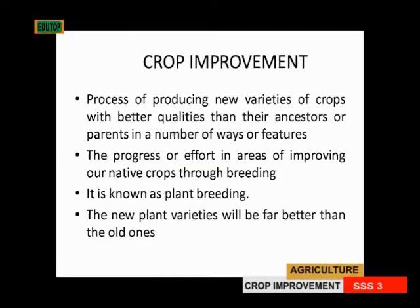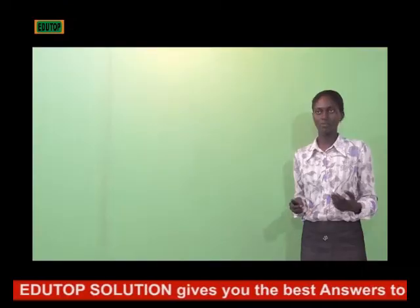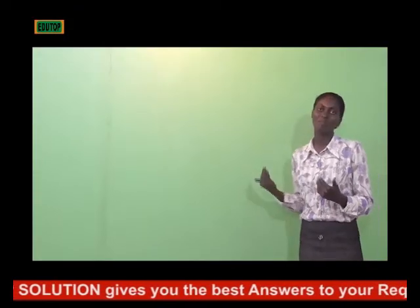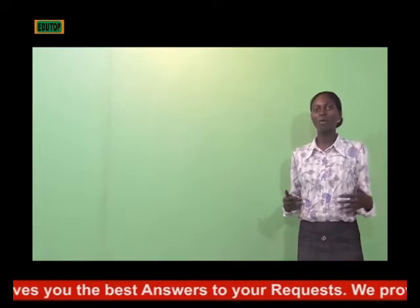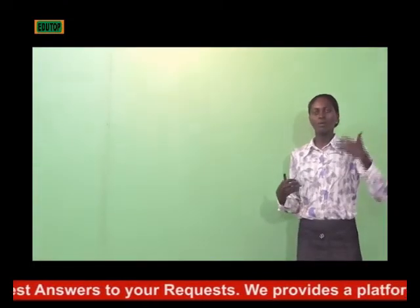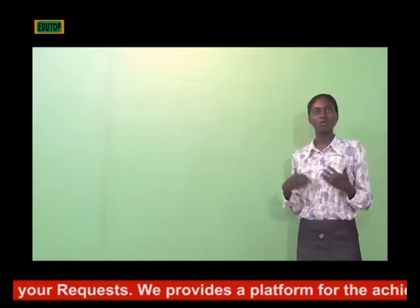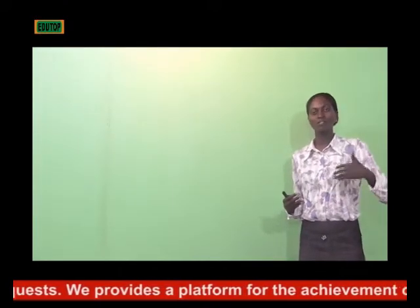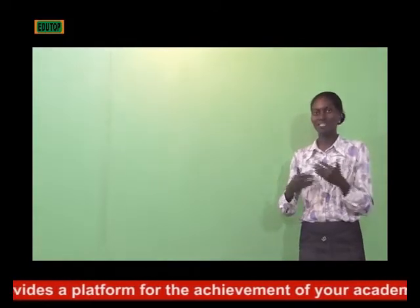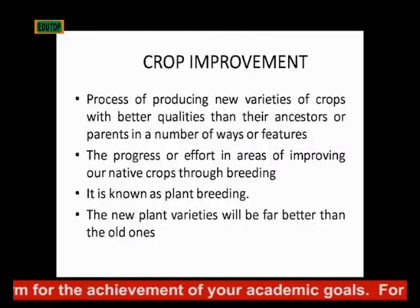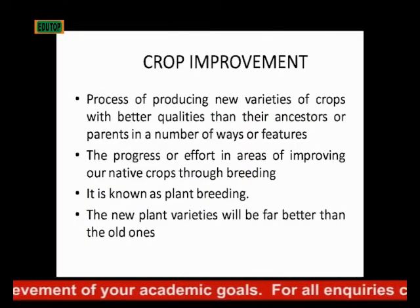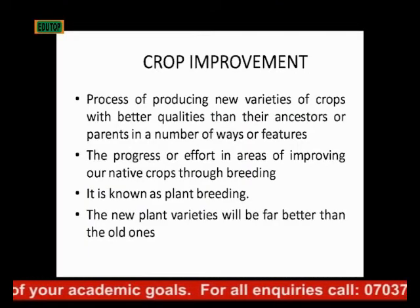Now to Theme 1 — Crop Improvement. Crop improvement is a process of producing new varieties of crops with better qualities than their ancestors or parents in a number of ways or features. What we do in crop improvement is to make the crops better than what we have in the parent plants. It is the progress or the efforts in areas of improving our native crops through breeding.